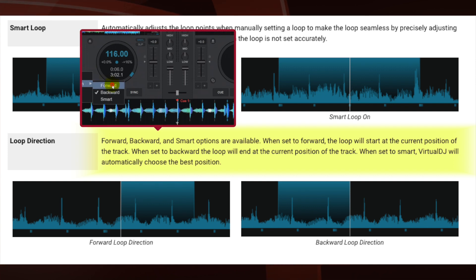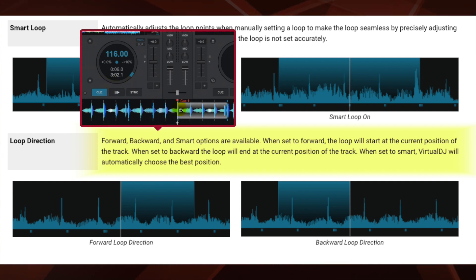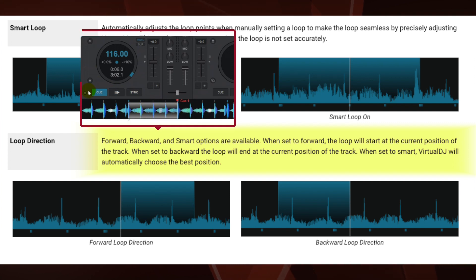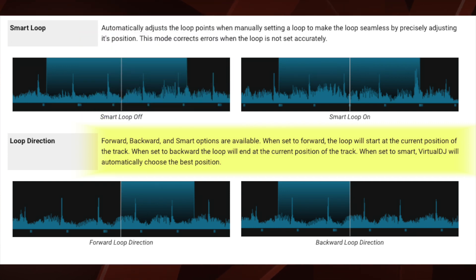Now these are pretty self-explanatory, but just so I'm being thorough, here are the definitions straight out of the Virtual DJ manual. When set to forward, the loop will start at the current position of the track. When set to backward, the loop will end at the current position of the track. When set to smart, Virtual DJ will automatically choose the best position.